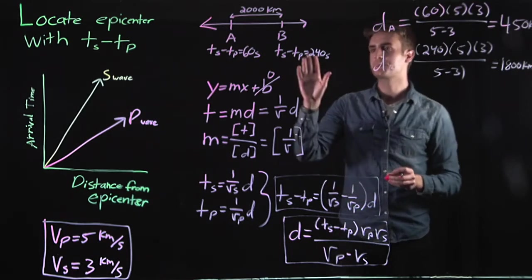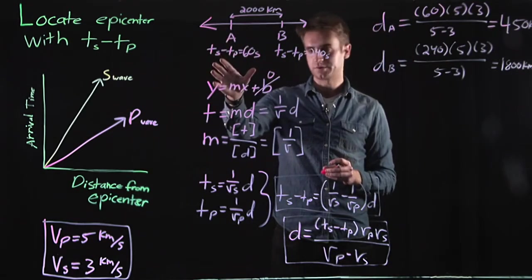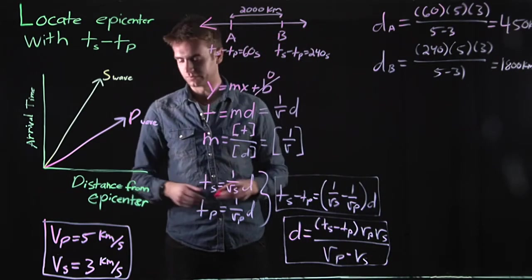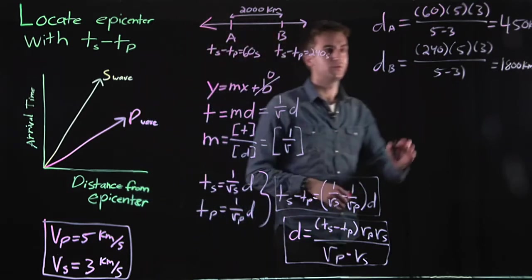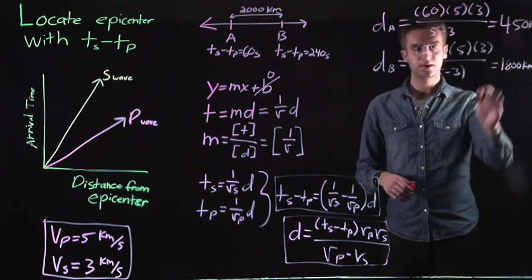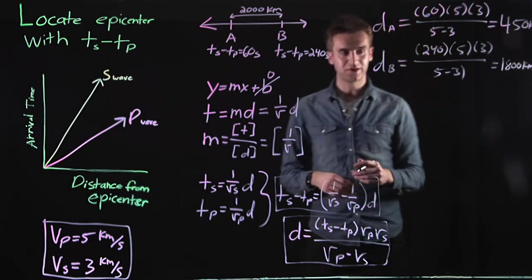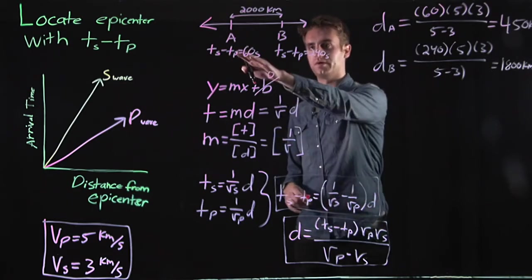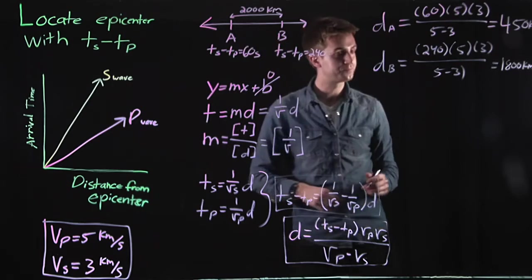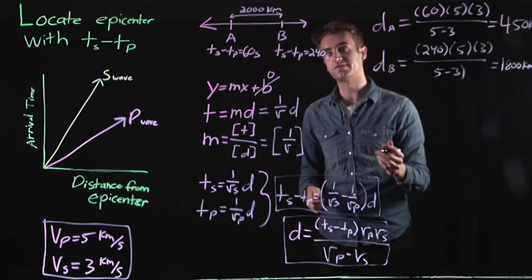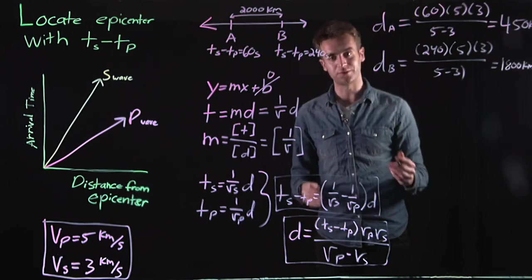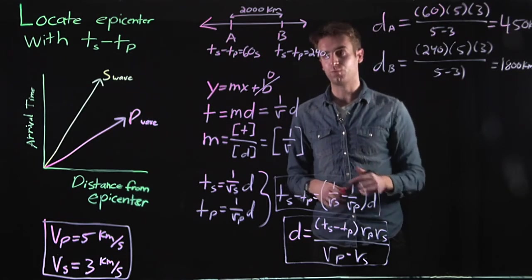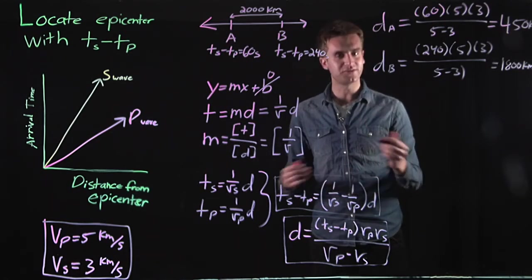Knowing only the difference in travel time between the S and P wave at these two stations, and their average velocities in the Earth, we've calculated the distance to the epicenter. It's worth noting that this distance could be anywhere within 360 degrees in a 2D plane around each station. We know how far away the earthquake is, but not exactly which direction it came from.